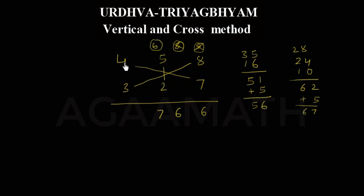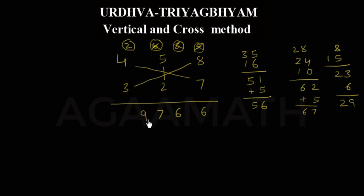Continuing 458 into 327: cross gives 4 into 2 is 8 and 5 into 3 is 15, total 23, plus carried 6 is 29. Write 9 and carry 2. Then 4 into 3 is 12, plus carried 2 is 14. So the result is 149966. If you practice the three-digit method carefully, you can do these calculations very fast.